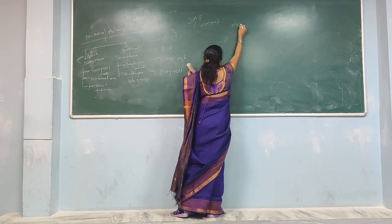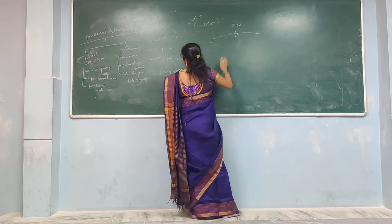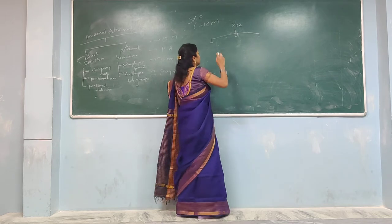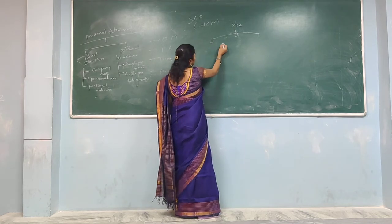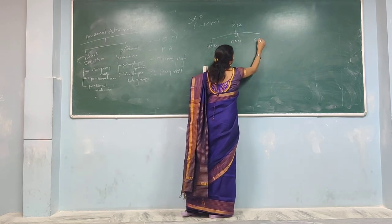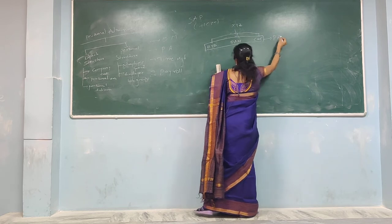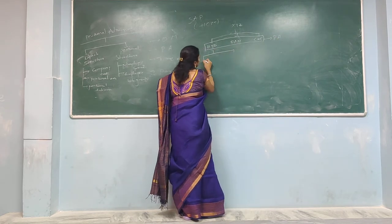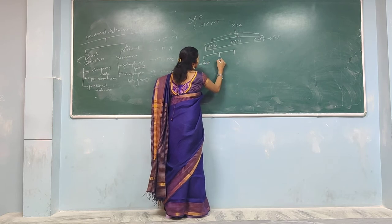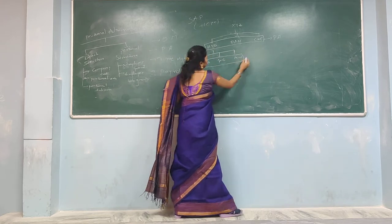Let us consider XYZ as a company again. In organizational management, we discussed personal area in terms of job and work center. In personal administration, we are considering Hyderabad, Bangalore, and Chennai as the personal areas. In Hyderabad, we have three sub-branches located at Hitech City, Gachiboli, and Minespace — these are to be considered as personal sub-areas.